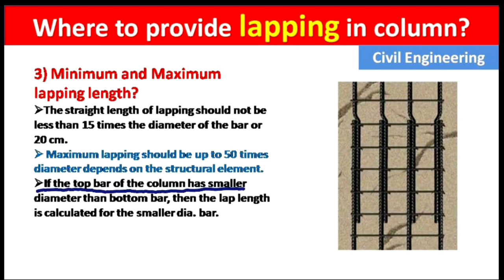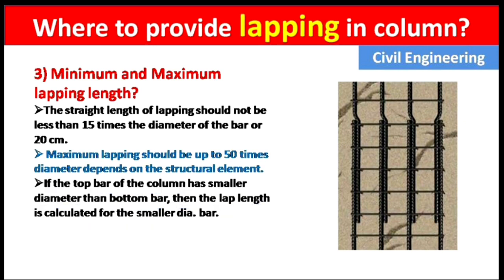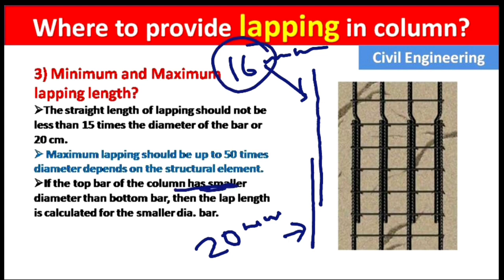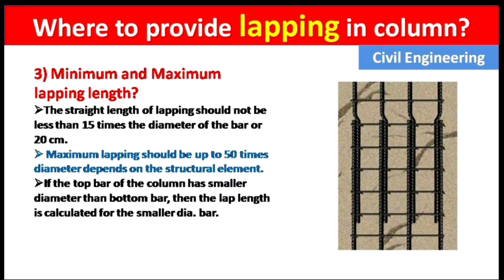If the top bar of the column has a smaller diameter than the bottom bars, the lapping length is calculated based on the smaller diameter. For example, if one rod is 20 mm and another is 16 mm, we use the smaller diameter — 16 mm — and multiply by 15 to get the lapping length.